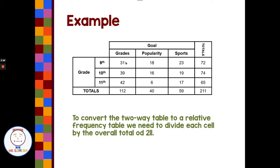So each of these, 31 divided by 211, 39 divided by 211, 42 divided by 211. We're going to take each number and we're going to divide it by this overall total. So that gives us our 1.00 or our 100% of data here at the totals. So we could take our calculator and convert each of these over.